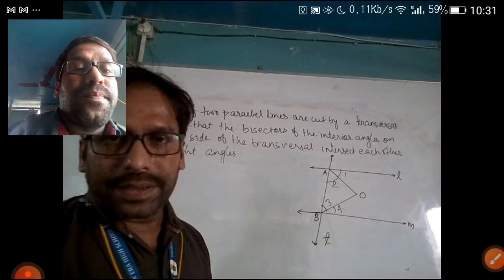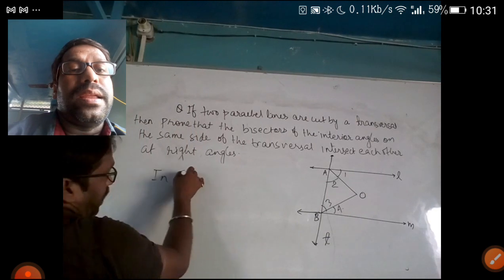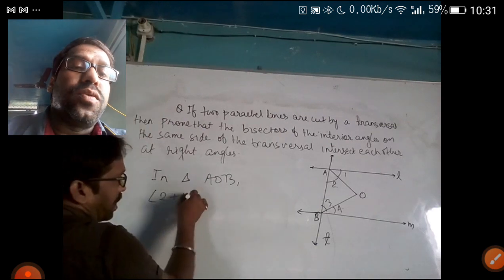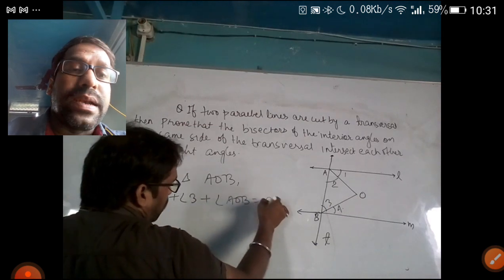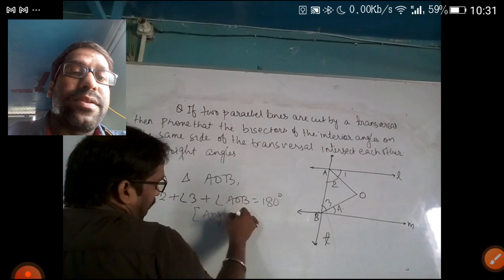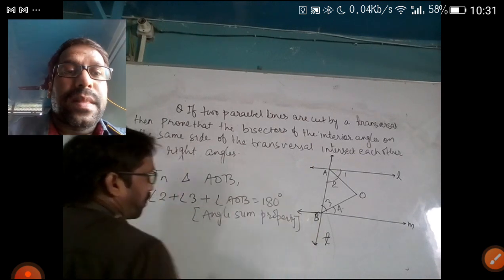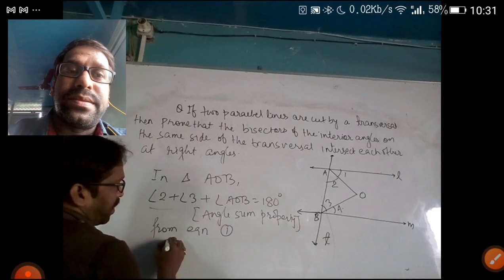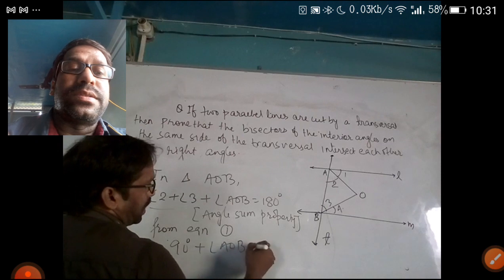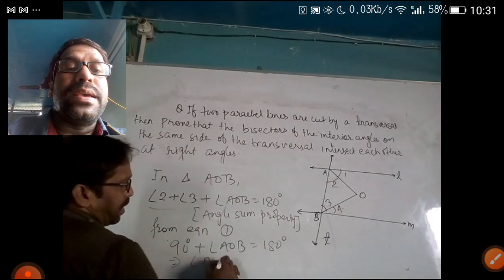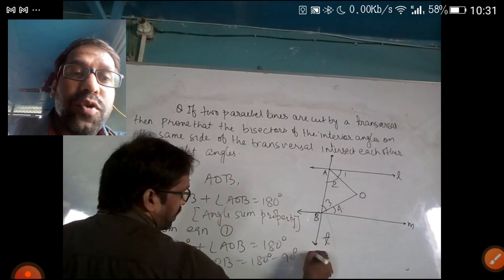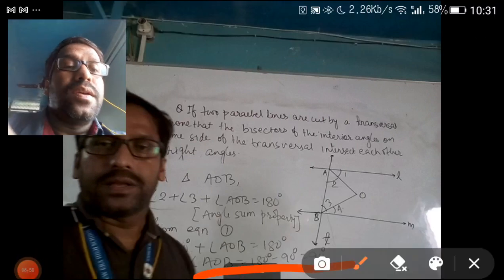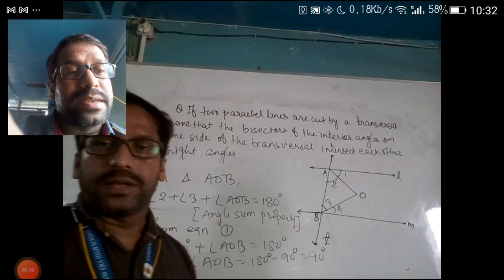Now, in triangle AOB, by the angle sum property of a triangle: angle 2 plus angle 3 plus angle AOB equals 180 degrees. We have already found that angle 2 plus angle 3 equals 90 degrees. So angle AOB equals 180 minus 90, which equals 90 degrees. This is exactly what we had to prove — angle AOB equals 90 degrees. We have proved this using the angle bisector property of a triangle.